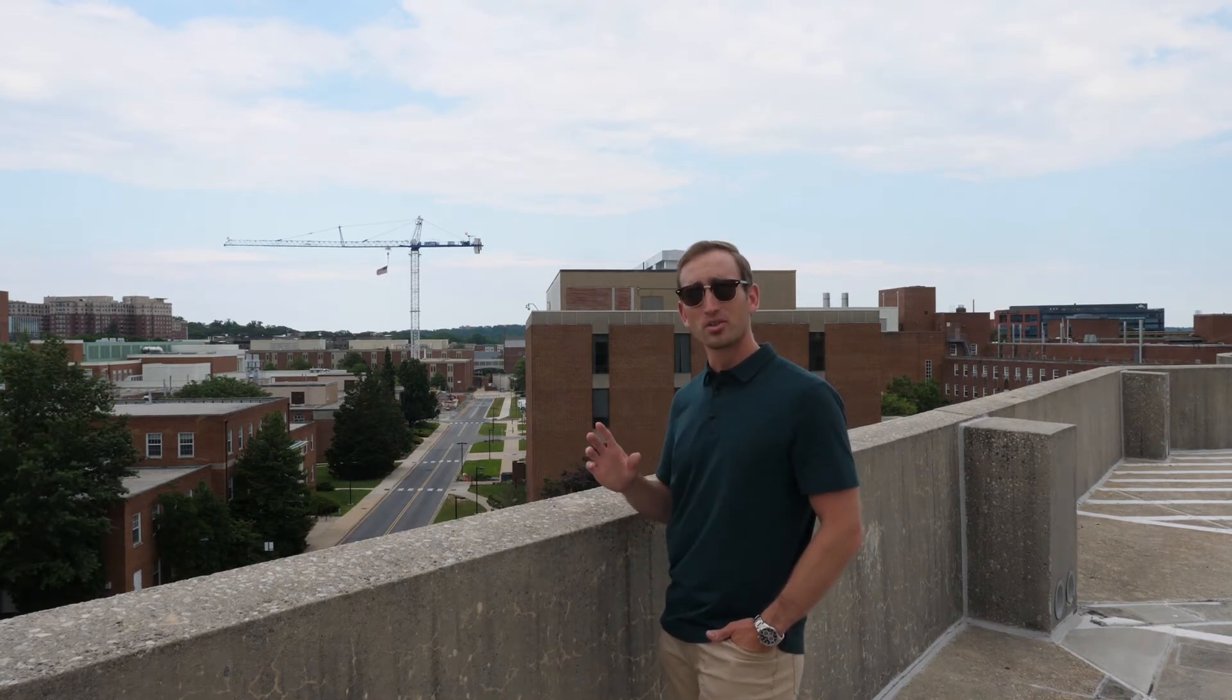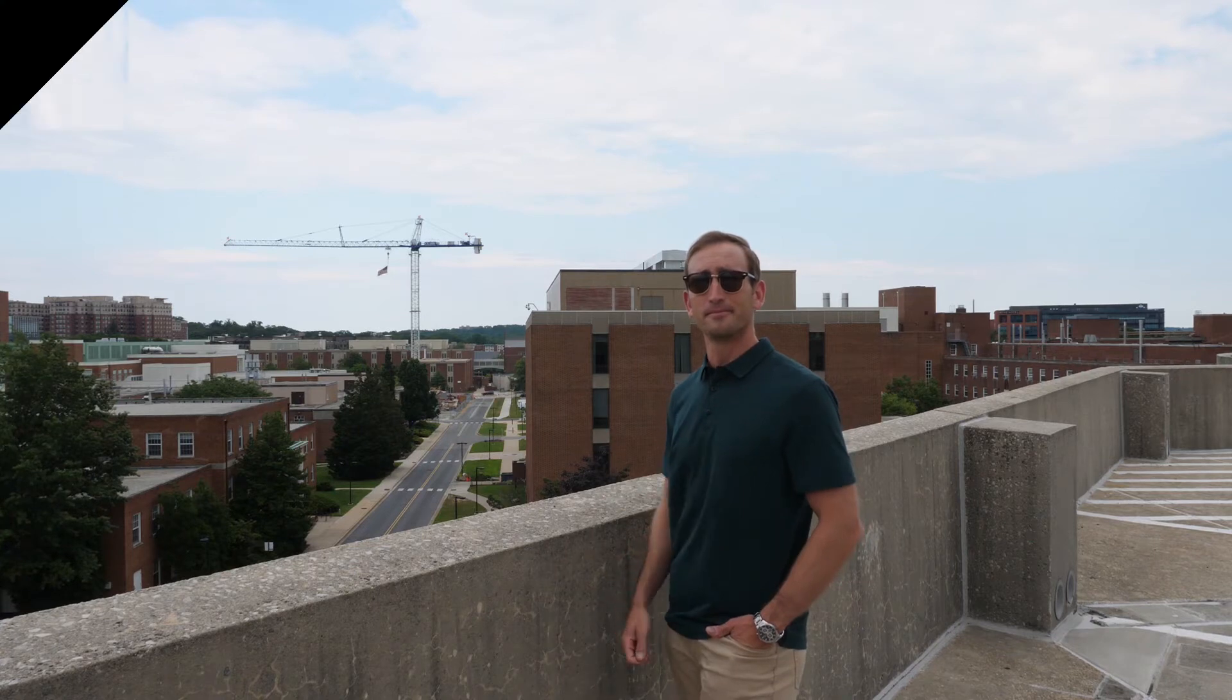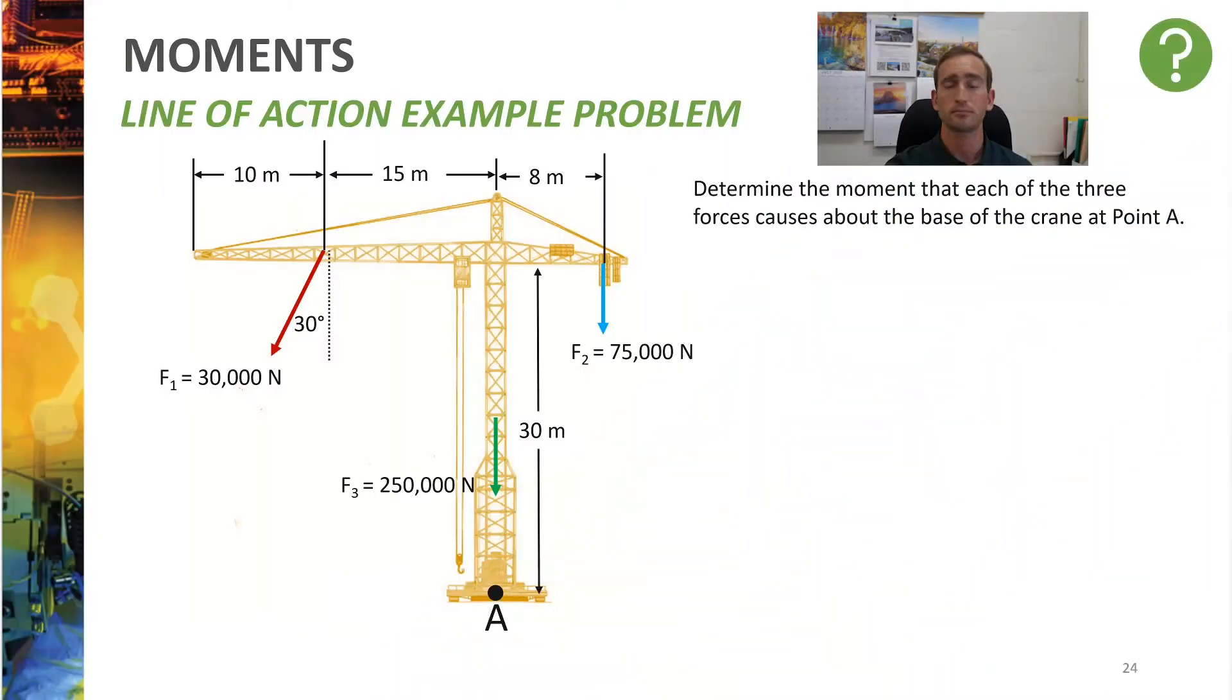Let's see how the example combines some of the concepts we've talked about and review some of the things that we've learned thus far. Now that we've done all these different examples in class, I want you to look at the following example and try and figure out what moment is caused by each of these forces about the pivot point of the crane, A.